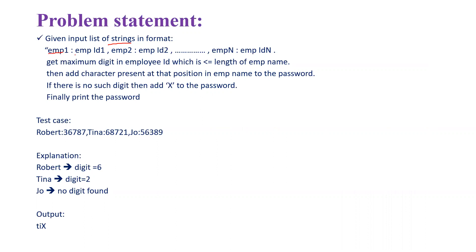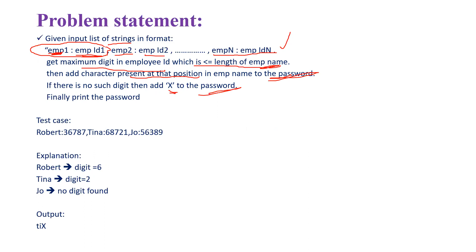The format is: employee name, employee ID, second employee name, second employee ID, and so on. For every employee, you need to find the maximum digit present in the employee ID which is less than or equal to the length of the employee name. Then find the character present at that digit position and add it to the password variable. If you don't find any character at that position, add 'X' to the password. By doing these three steps for every name, you get a character, and by adding all those characters you get the final password.